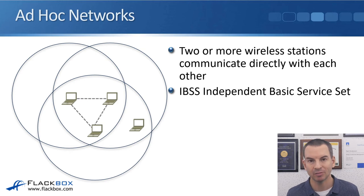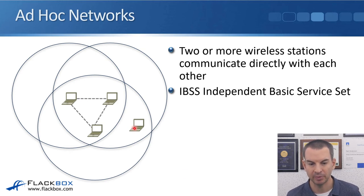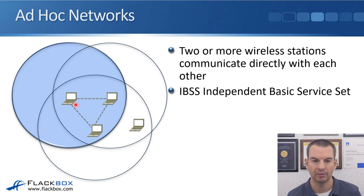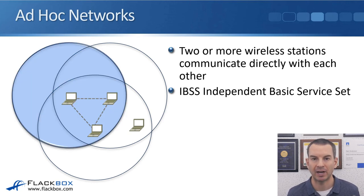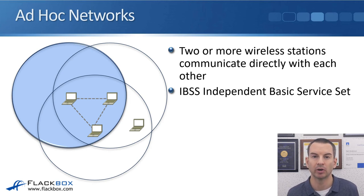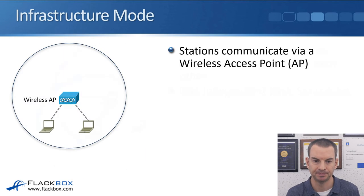It's probably pretty obvious there's going to be a scalability issue with this. Because what if we add another laptop to the picture? Now this laptop is in the coverage area of the two other laptops nearest to it, but it's outside the coverage area of the laptop on the left. So there's that scalability issue with ad hoc networks — it only really works for a WPAN, a wireless personal area network, where the devices are all very close to each other.